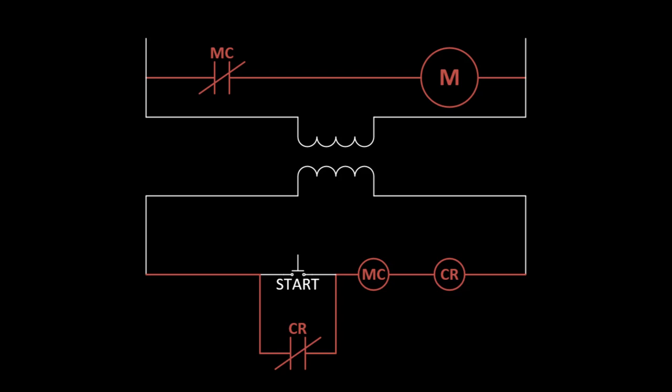Both sets of contacts stay closed. This arrangement, whereby a relay contact provides a path to energize its own coil, is known as a latching or sealing relay, and in relay logic, it is used as a form of memory.